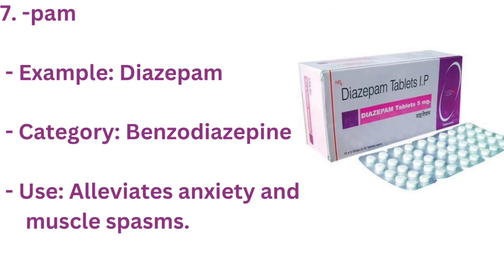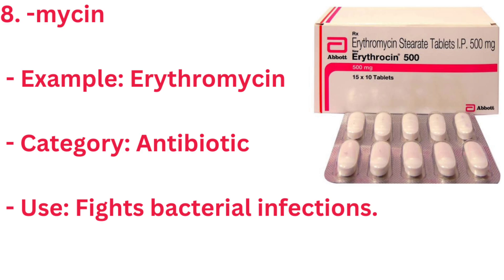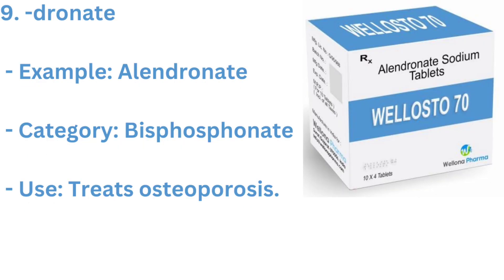7. PAM — Example: DIAZEPAM. Category: BENZODIAZEPINE. Use: ALLEVIATES ANXIETY AND MUSCLE SPASMS. 8. MYCIN — Example: ERYTHROMYCIN. Category: ANTIBIOTIC. Use: FIGHTS BACTERIAL INFECTIONS.